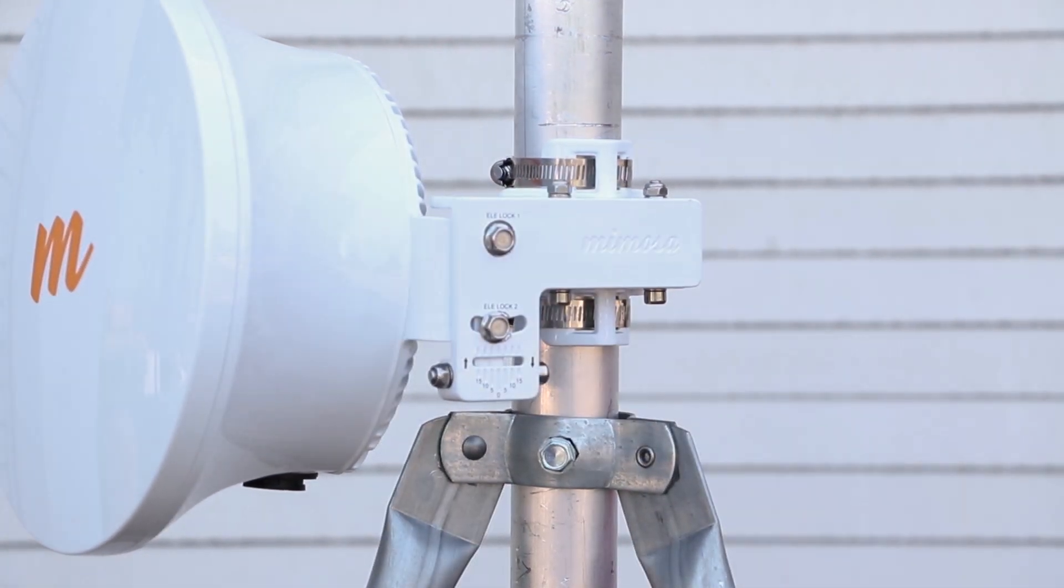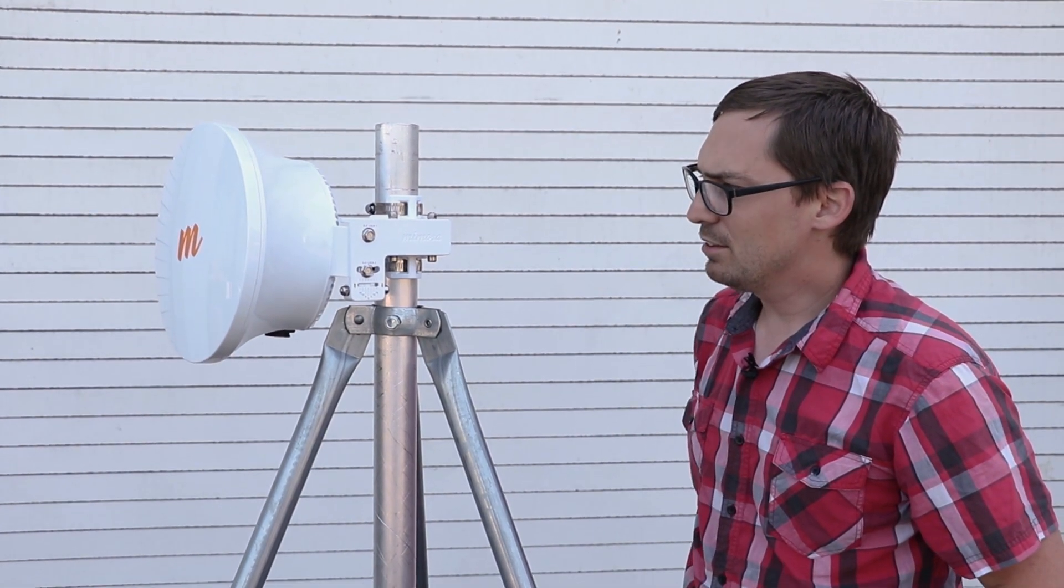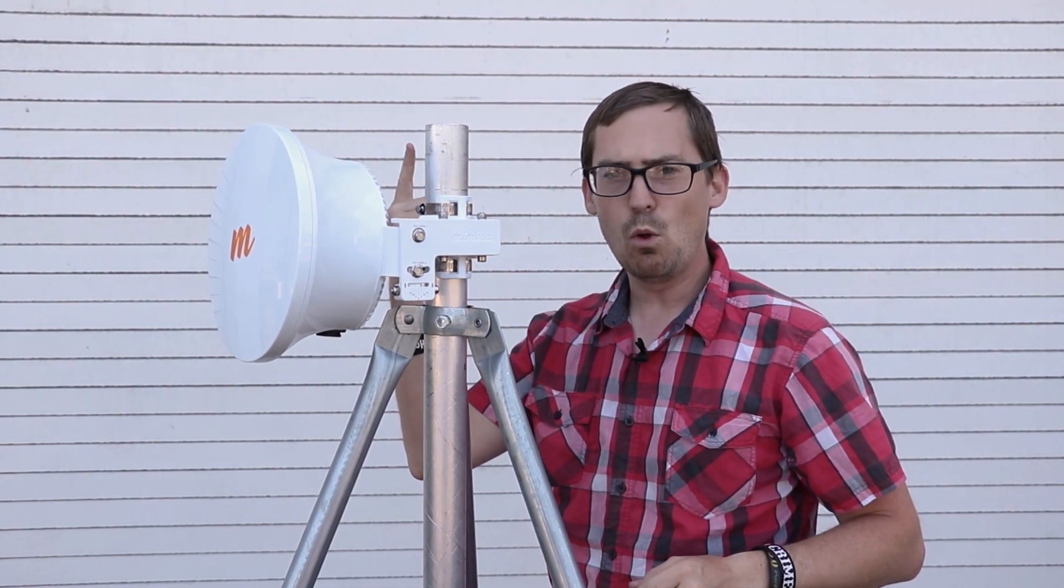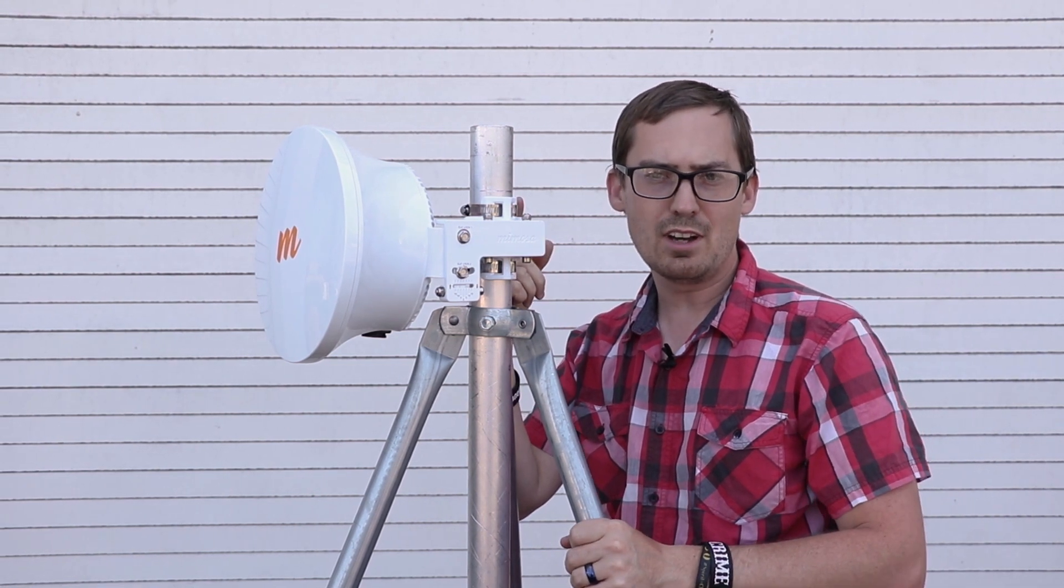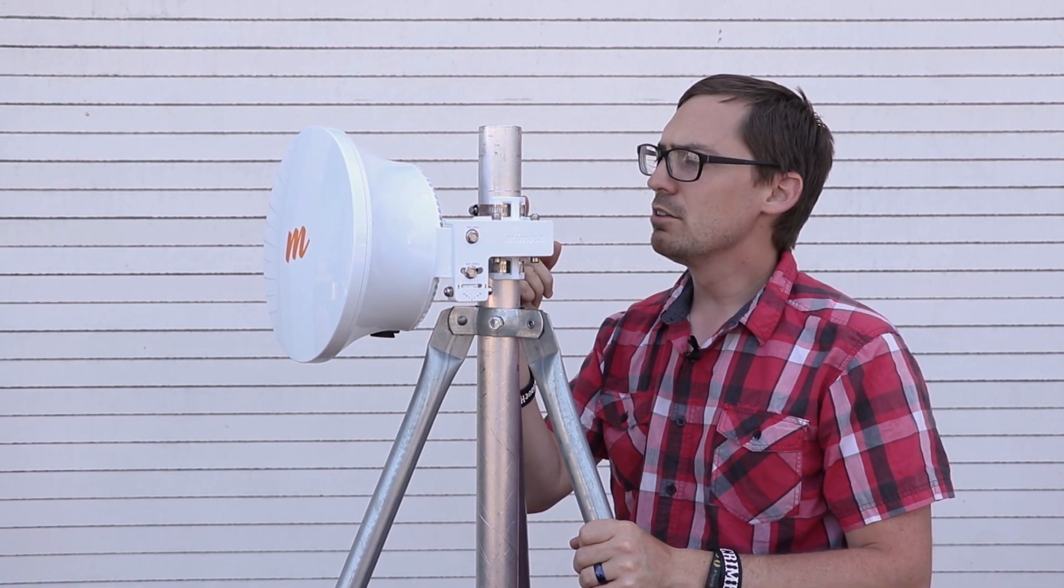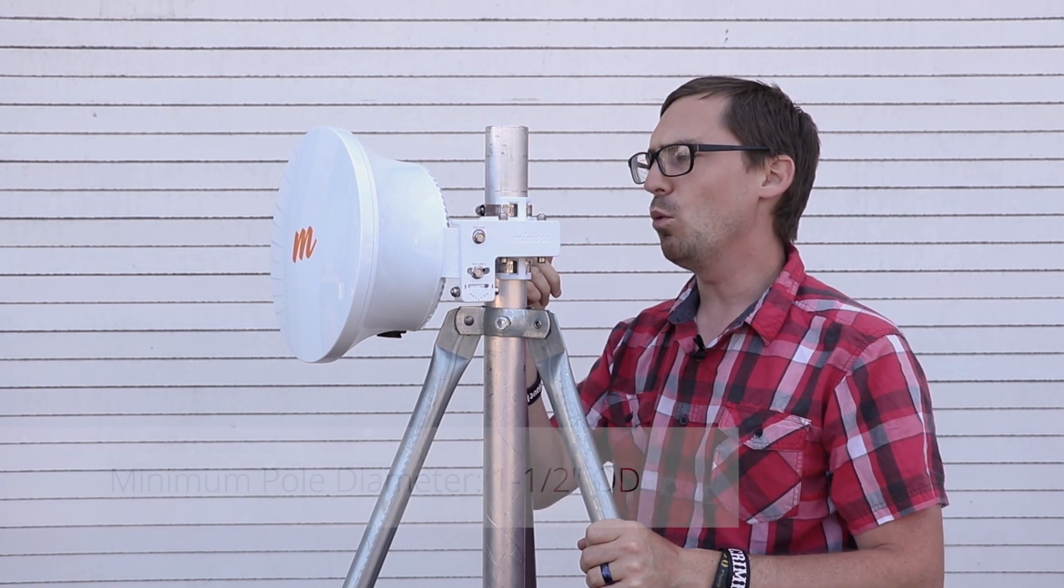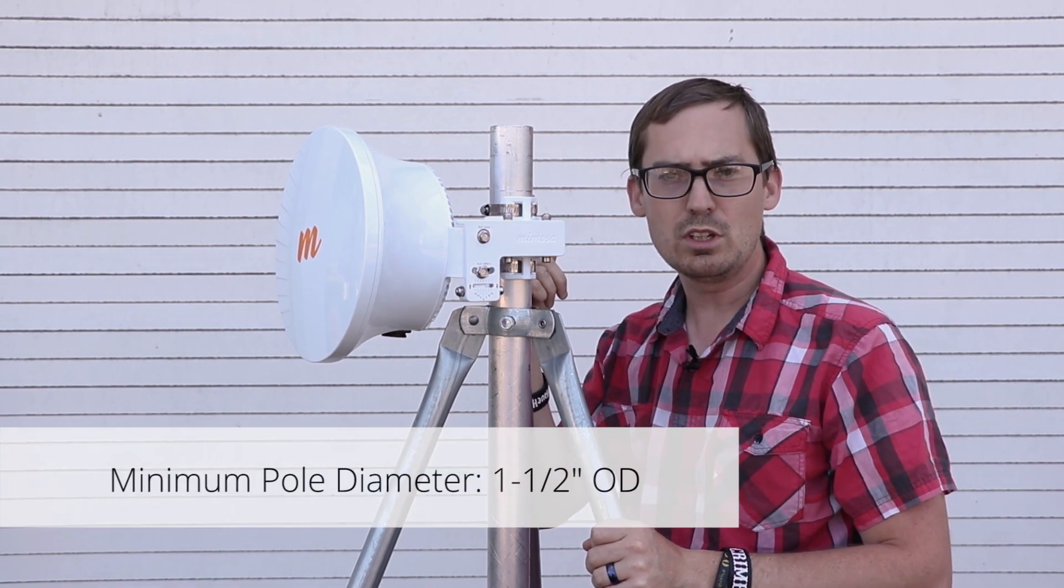Another thing that has been talked about is that the B24 spins on the pole. But this only happens when you're using a pole that's smaller diameter than what's recommended. So Mimosa recommends at least a one and a half inch outer diameter or OD pipe.